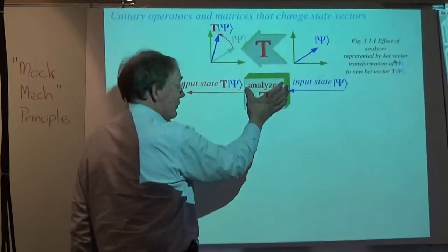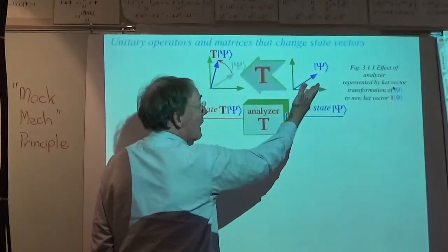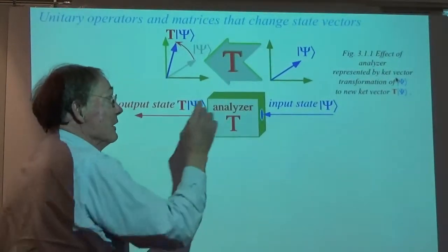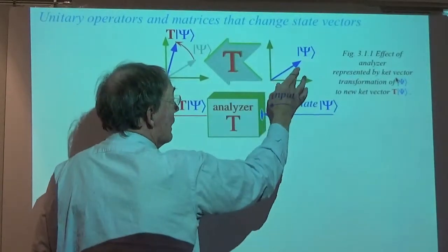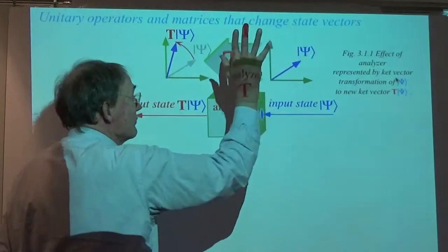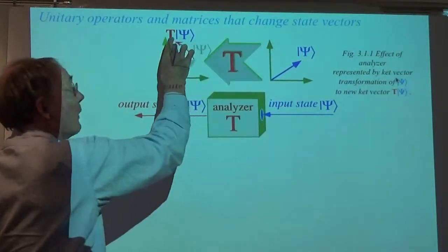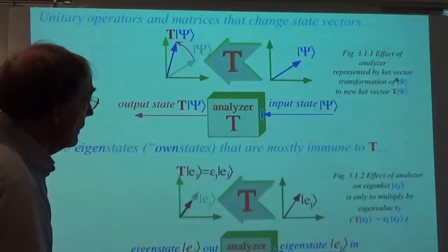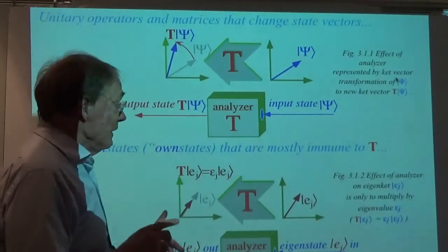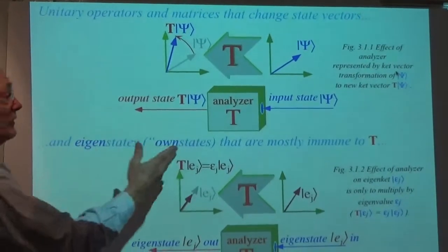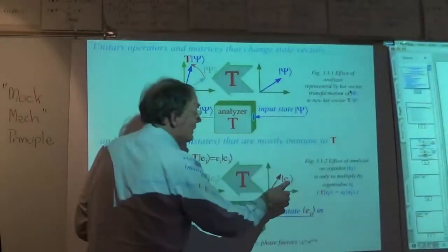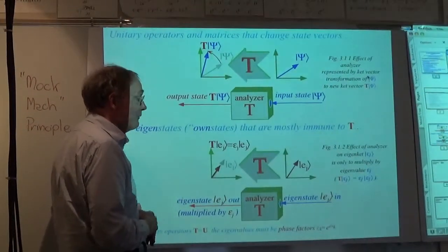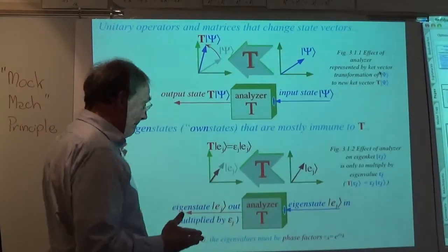We've been talking about analyzers that transform a polarization or spin state — they're the same mathematics. The spin state means Stokes vector if you're talking about polarization. In any case, here sits a vector — it's a cartoon of it. This thing happens, and the vector ends up somewhere else. That's what's been going on in our little demos. What I want to do is find certain states that I could feed into this — say the E state — that would come out in the same direction, so to speak. That is, the vector would be, except for a factor, the same.